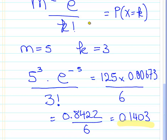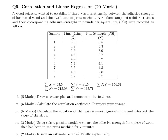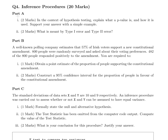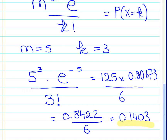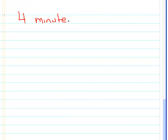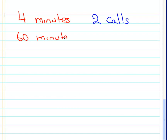Now let's go back to the question. It discusses a four-minute period. In a four-minute period, we expect two calls, because 60 minutes equates to 30 calls — so by proportionality, four minutes gives two calls. So M is going to equal two.